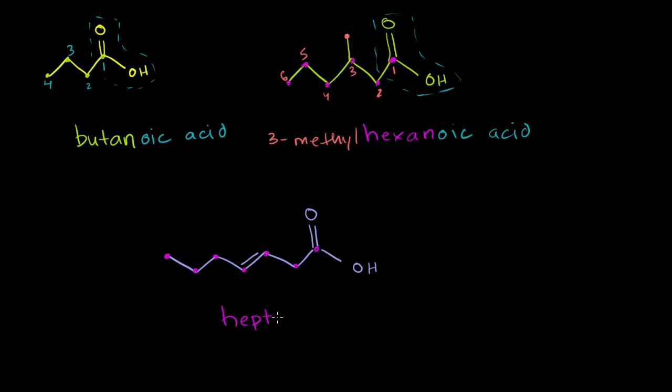If this was just an alkene, we would just call it heptene. But we're not going to put this last E here, because this is a carboxylic acid. And to specify where that double bond is, we need to start numbering, and we start numbering at the carbonyl carbon. One, two, three, four, five, six, seven.